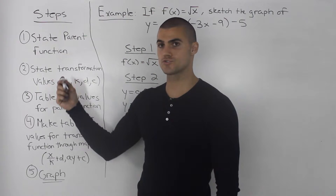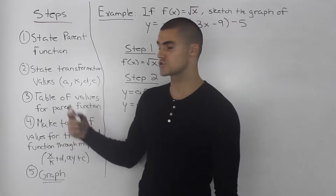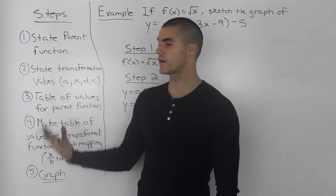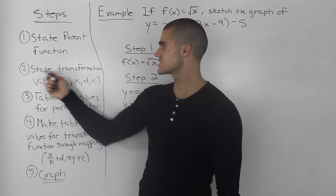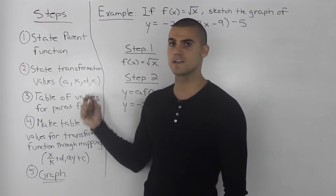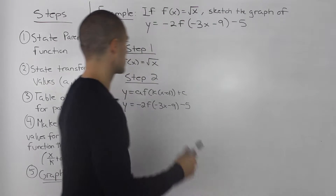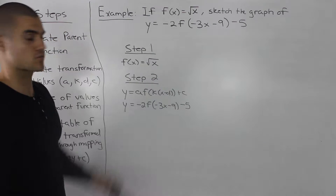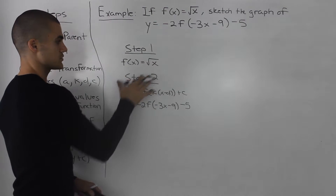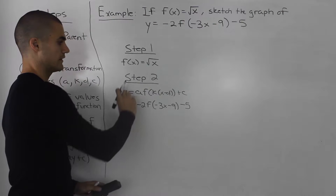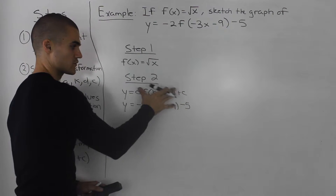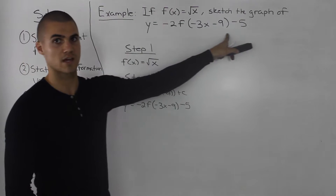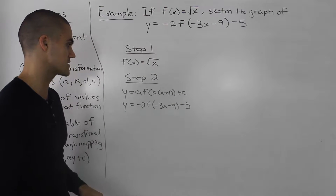I'm going to do steps 1 and 2 at the same time since we should be comfortable with these now. Step 1: state the parent function — already given, square root of x. Step 2: state the transformation values a, k, d, and c. I like to write out the general transformation format and then right under it write out the transformations for our specific example.